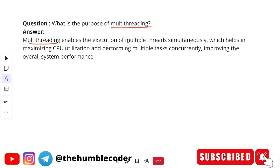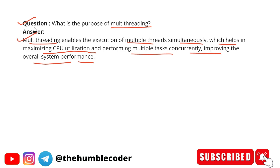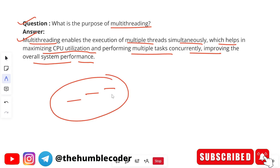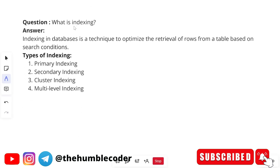What is the purpose of multi-threading? Multi-threading enables the execution of multiple threads simultaneously, which helps in maximizing CPU utilization and performing multiple tasks concurrently, improving overall system performance. When one thread of a task is on hold, other tasks will execute. Without multi-threading, one task would complete before the next starts, which is time-consuming. Multi-threading resolves this problem.